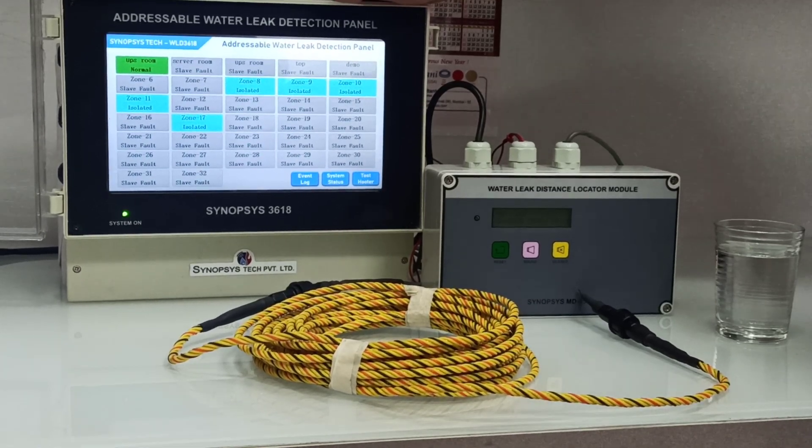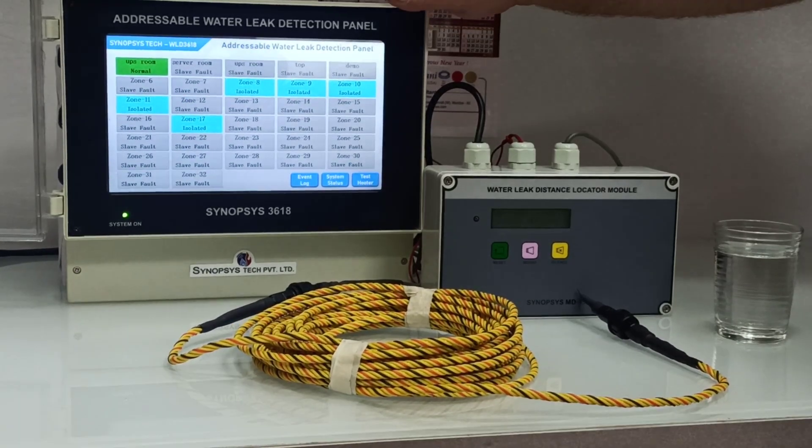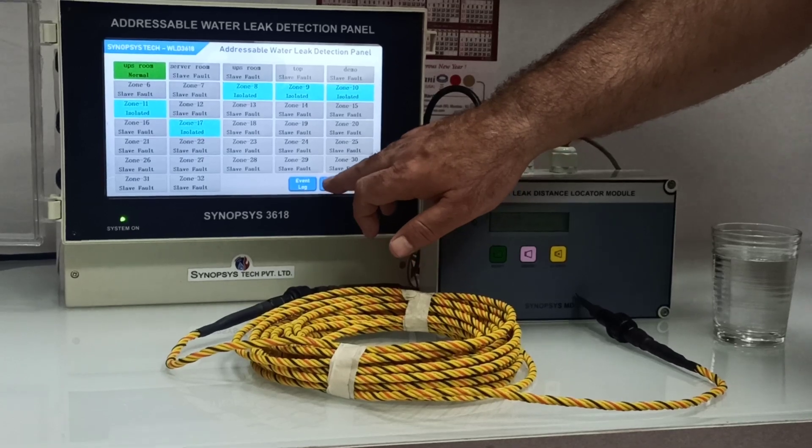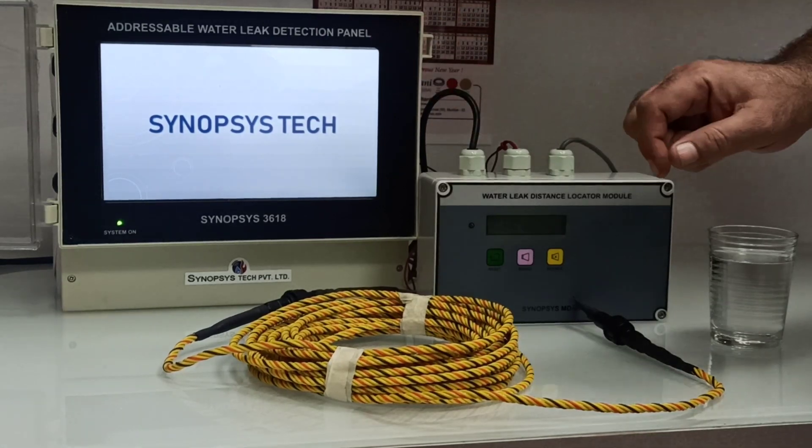Now I'll explain the main points of this panel. The functions we have - we go to system status. This is how you go into the programming mode.